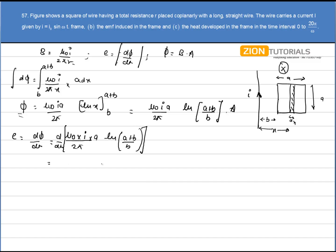Now since i is changing over here and rest of them are constant so I can write mu not A by 2 pi, natural log of A plus B by B. Di by dt is given by i not omega cos omega t. So this is my answer for the first part.